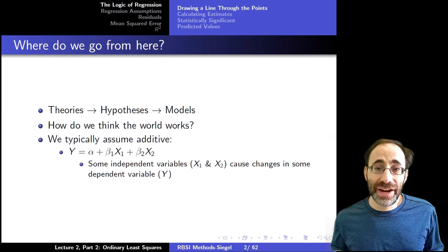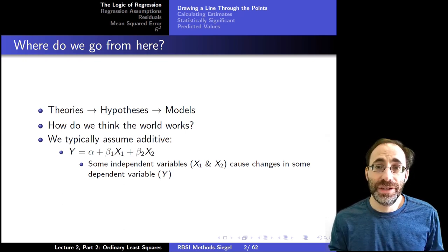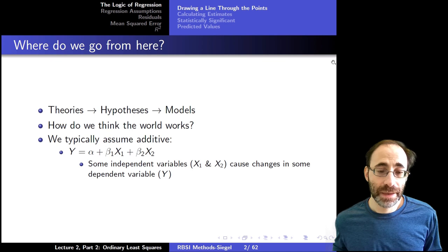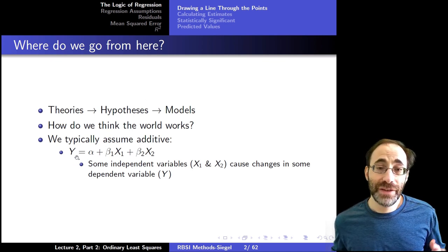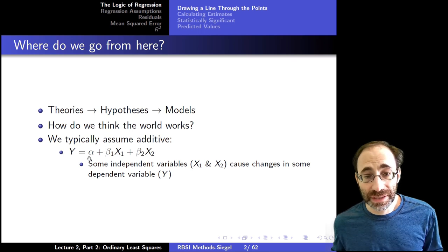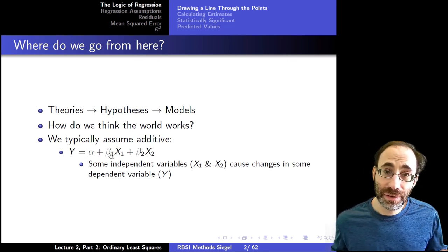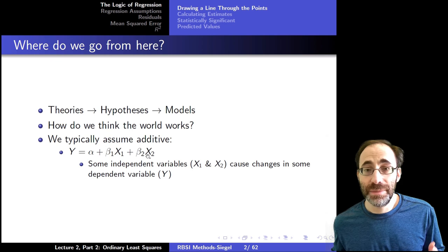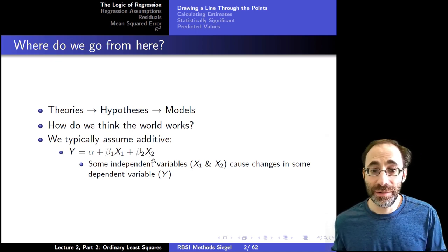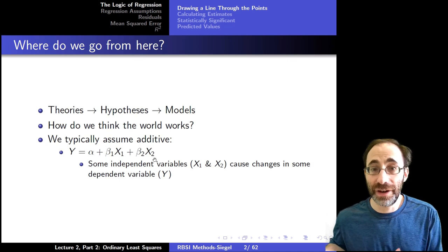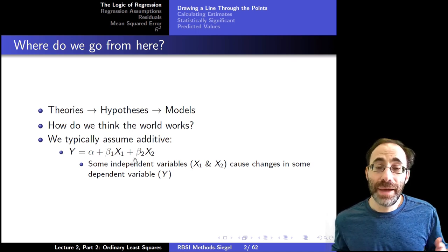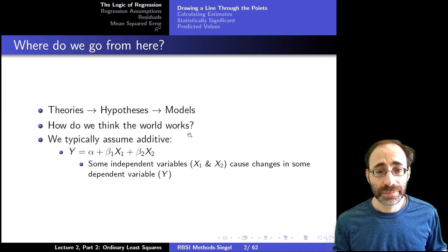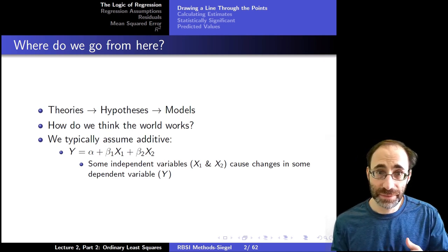So we typically assume an additive relationship between independent and dependent variables. This is usually false, but it can be a simplifying assumption and accurate for small changes in X. Here's a typical assumption: you have a dependent variable Y equal to some constant α plus β₁X₁ plus β₂X₂. So if X₁ and X₂ are two different independent variables, Y is the dependent variable, and β₁ and β₂ are coefficients that multiply X₁ and X₂, and α is a constant.